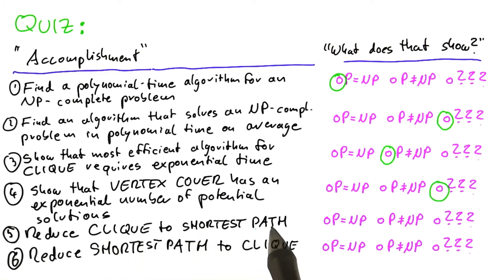And since shortest path is solvable in polynomial time, if you manage to reduce clique to shortest path, that would show that P equals NP.